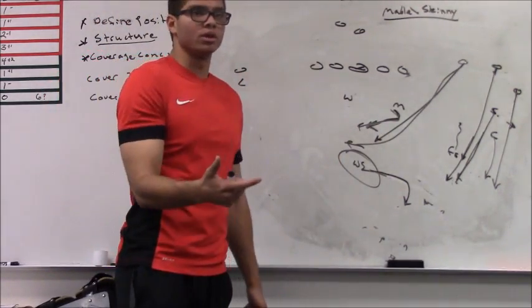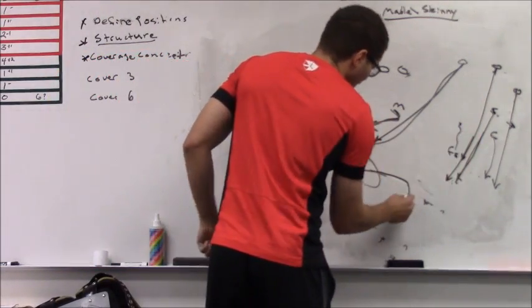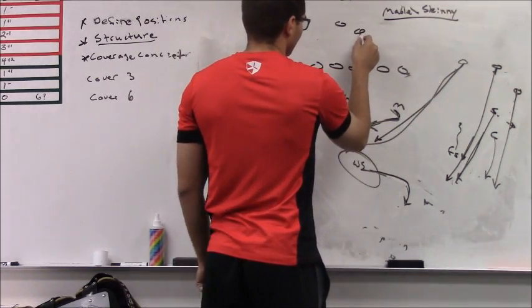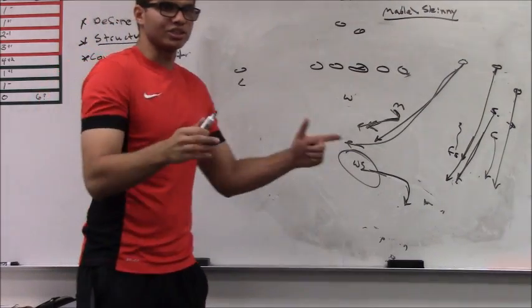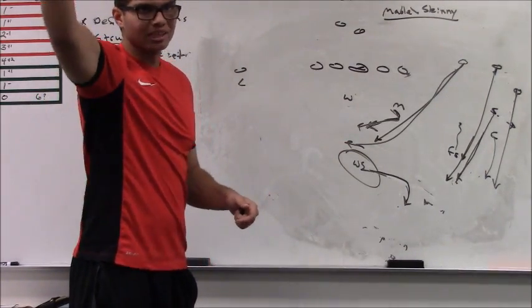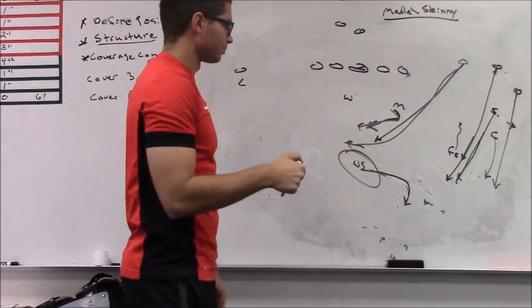And that means this weak safety doesn't have to get as far to help on number 2. Because he's not having to take him one-on-one in the middle of the field. So, now, the ball has to be thrown high and this safety can vision the quarterback a lot more. He can stay more in the middle of the field and be less concerned, less stressed by the number 2.